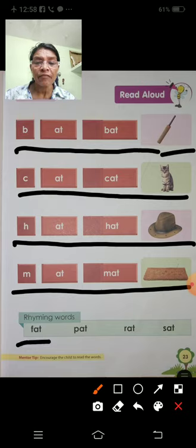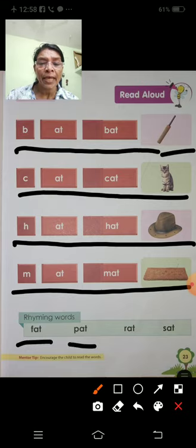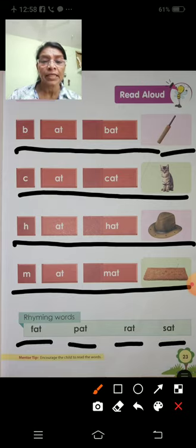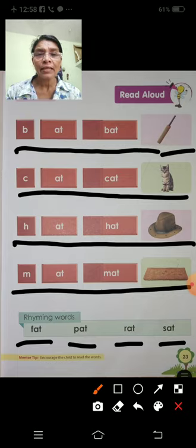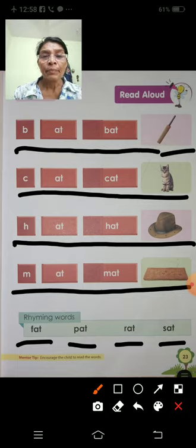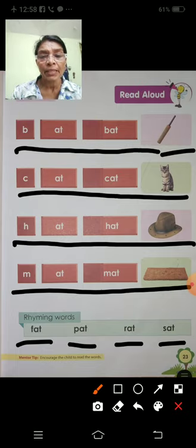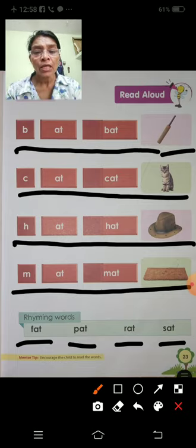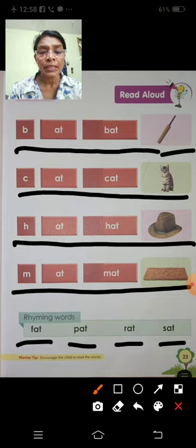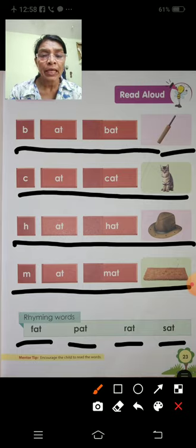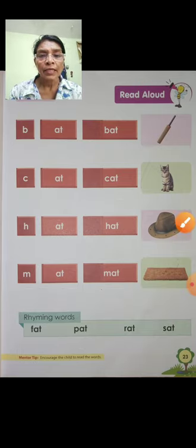Iska rhyming words hai: F-A-T, Fat. P-A-T, Pat. R-A-T, Rat. S-A-T, Sat. Samajh mein aaya? B-A-T, Bat. C-A-T, Cat. H-A-T, Hat. M-A-T, Mat. F-A-T, Fat. P-A-T, Pat. R-A-T, Rat. S-A-T, Sat.